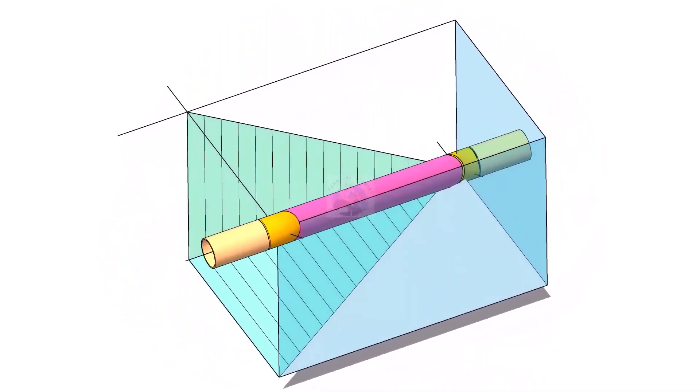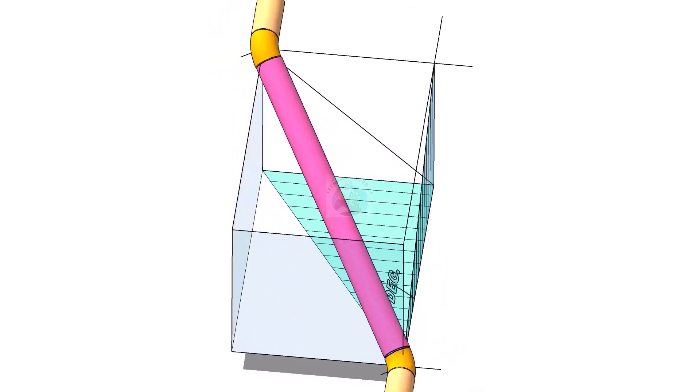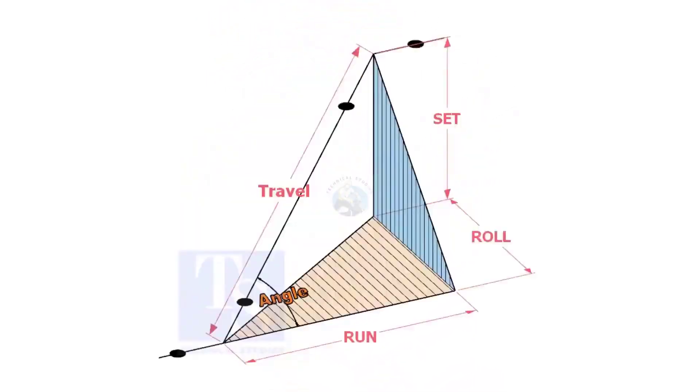Welcome to technical studies. In a piping drawing of a double rolled offset, usually the dimensions of the run, set, and roll are given.